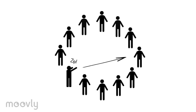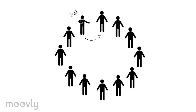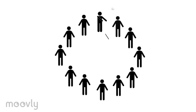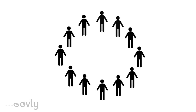Let them play until they are well acquainted with the rules of zip, zap, and boing. When the team is ready, a real match can be played. Everyone has two lives. When a participant makes a mistake, they will lose one life. When someone has made two mistakes, they have to sit down and the remaining participants continue to play.